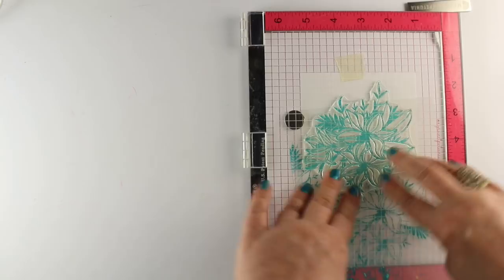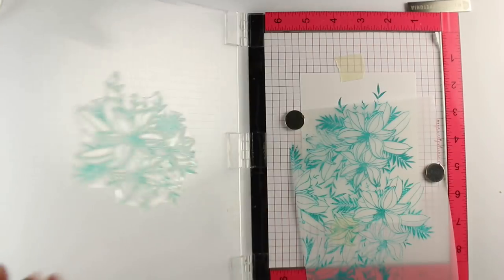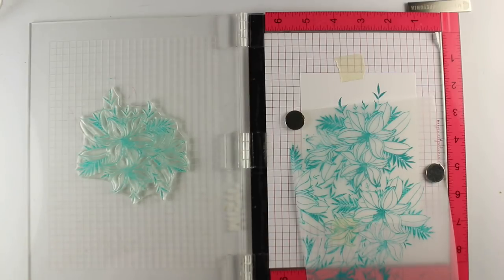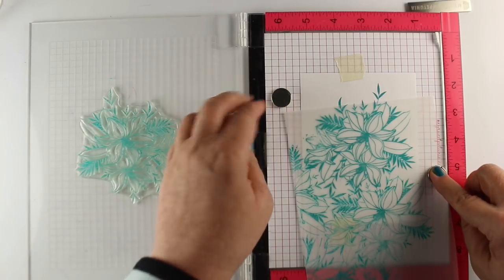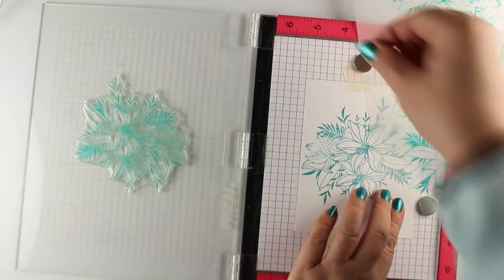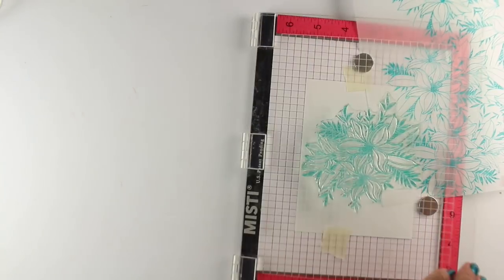I'm just going to continue working my way all the way around the card. Notice that I've made it a really big piece of vellum so I could have lots of areas to choose from. So if you smush one area, you could still just move it around and choose which section that you want to do this with on your card.